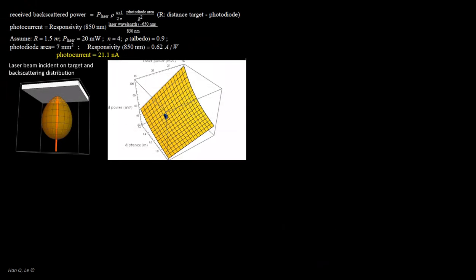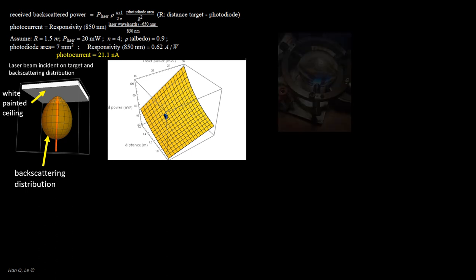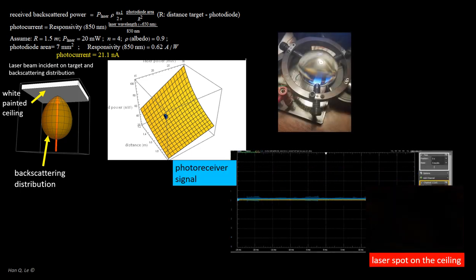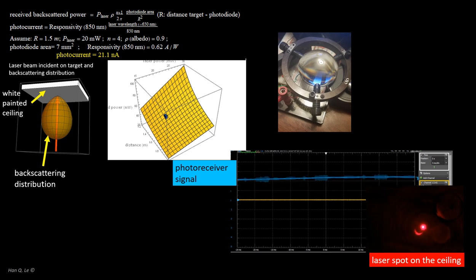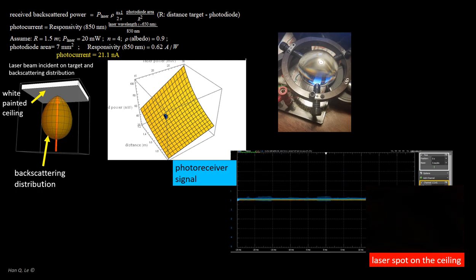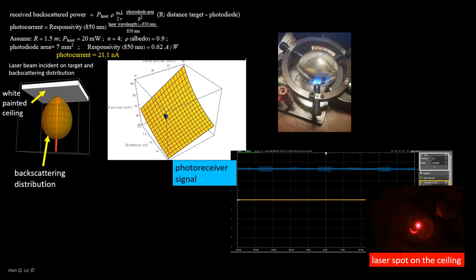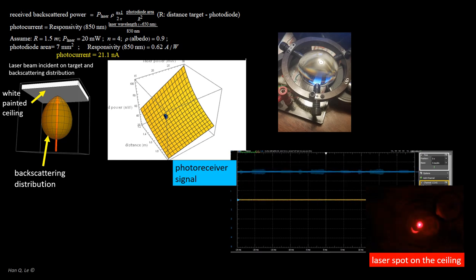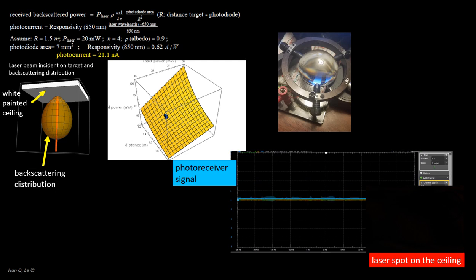This is a lidar demonstration. A red laser beam is shown on a ceiling with a certain backscattering distribution as shown. The photoreceiver has a collection lens to focus the backscattered light. The photoreceiver signal, as measured by AD2 scope 2, the blue trace, shows the response when the laser is on or off. The lidar signal calculation shows that the photoreceiver response is within the ballpark as specified by the manufacturer, and typical for most silicon photodiodes.